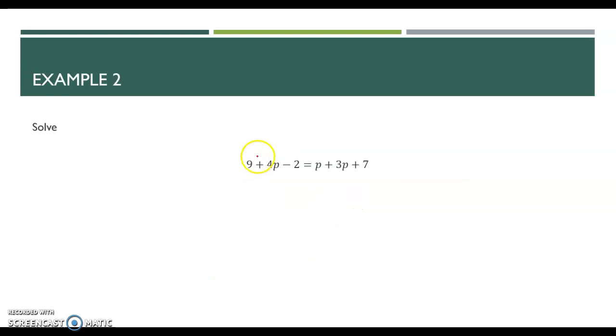All right, so here's our next one. In looking at it, I see that there are no parentheses. So I'm not going to be doing the distributive property, but I do see that I have a 9 and a negative 2 over here, and a 1p and 3p on this side. So my first step for this one is that I'm going to combine like terms. So I'm going to put my 4p in front. 4p and then 9 minus 2 is 7. So we have 4p plus 7 equals, and then 1p plus 3p is 4p plus 7.